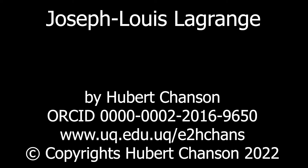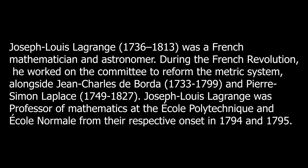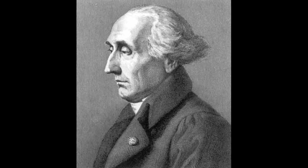Joseph Louis Lagrange was a French mathematician and astronomer. During the French Revolution, he worked on the committee to reform the metric system alongside Jean-Charles de Borda and Pierre-Simon Laplace. Lagrange was professor of mathematics at the École Polytechnique and École Normale from their founding.